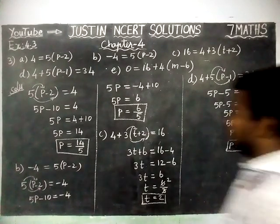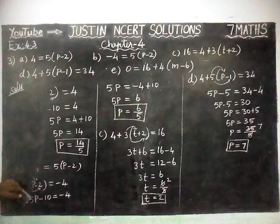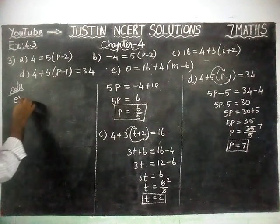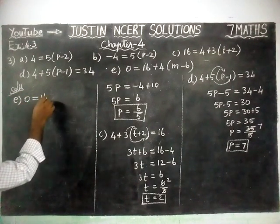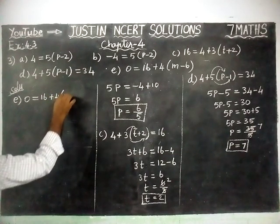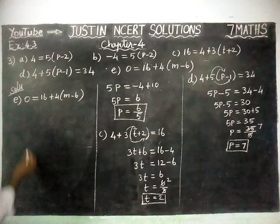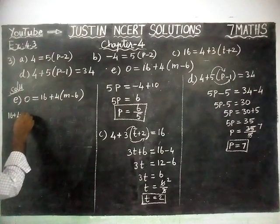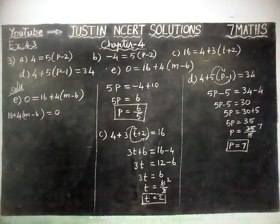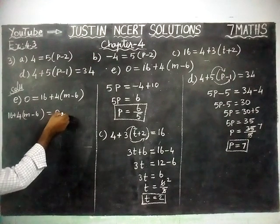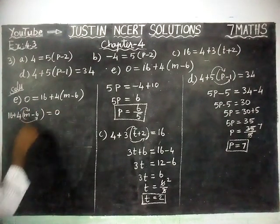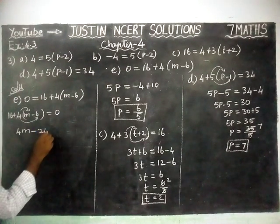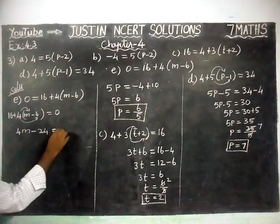Part E: 0 equals 16 plus 4(M minus 6). We are going to interchange the places. 16 plus 4 within bracket, M minus 6, is equal to 0. This 16 is going to the right hand side and we are multiplying this 4 inside. 4 into M equals 4M, plus into minus equals minus, 4 sixes are 24. This plus 16 is going to the right hand side, so minus 16.